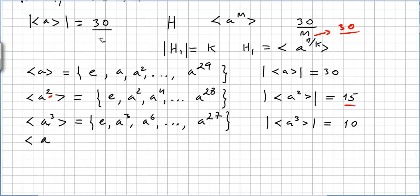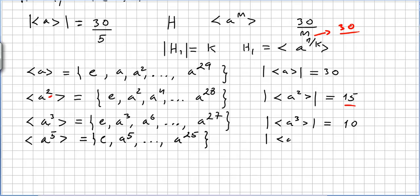What about 4? 4 does not divide 30, so we move to 5. The group generated by A to the power of 5: identity, A to the power of 5. The order of A to the power of 5 is 30 divided by 5, which is 6. So the order here is 6.